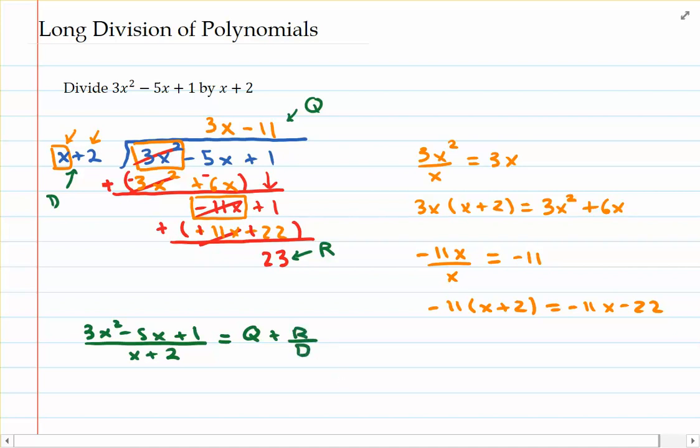So specifically, the quotient is 3x minus 11. The remainder is 23. So I'm writing 3x minus 11, so the Q part plus the R part is 23. And then that's going to be resting on top of the D part or the divisor x plus 2. And that's how we can use long division to rewrite a division problem involving polynomials, specifically rewriting it in like a mixed number format, so to speak.